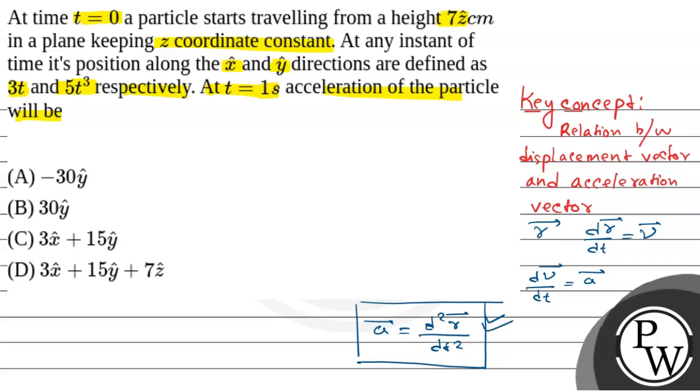Now, the question says that z coordinate is constant. So our r⃗ vector will be: r⃗ = 3t x̂ + 5t³ ŷ + 7ẑ.